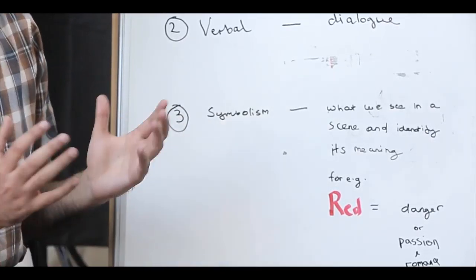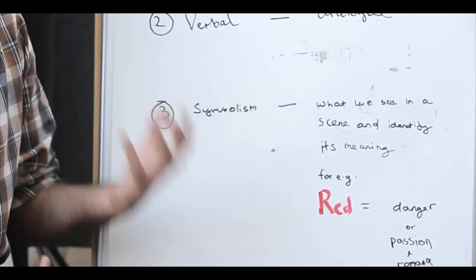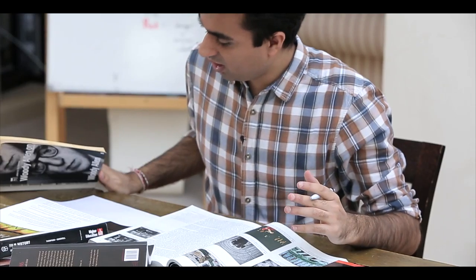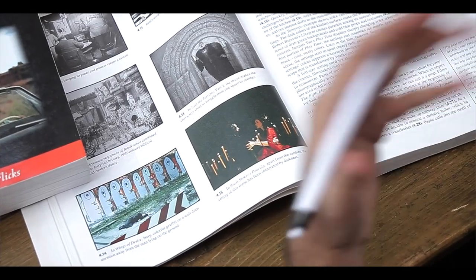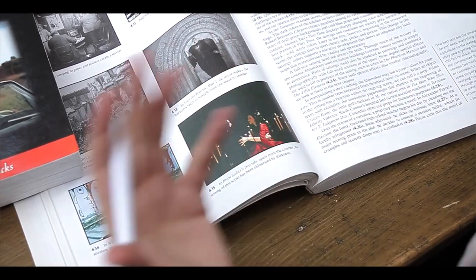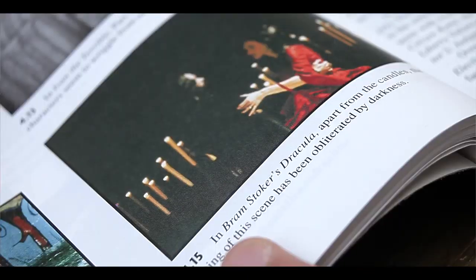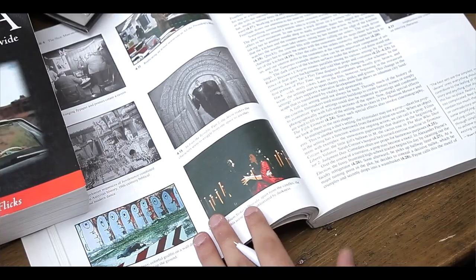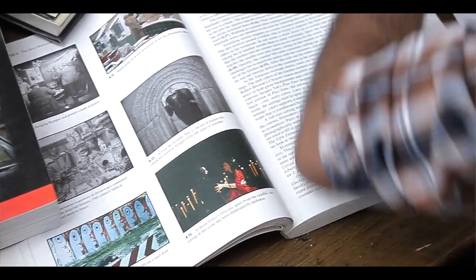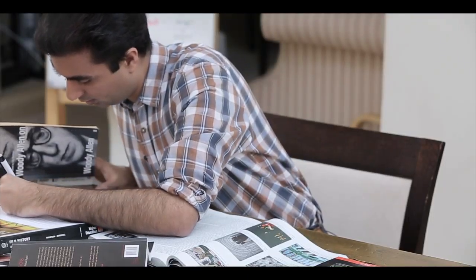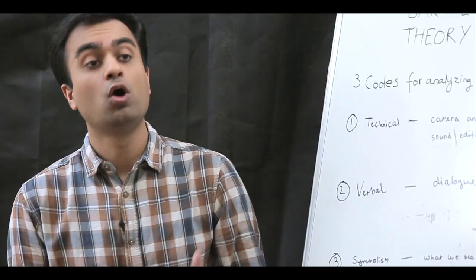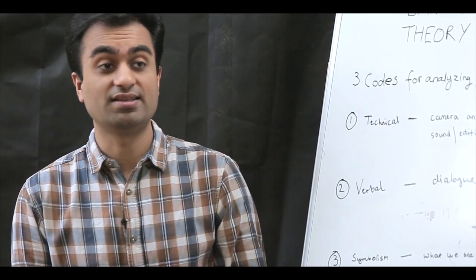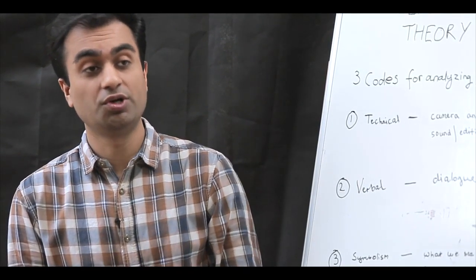This is then followed by the verbal, where we look at the dialogues that are delivered by the characters. And finally, we have symbolism. This is where we identify the connotations and denotations of what we see in a film.